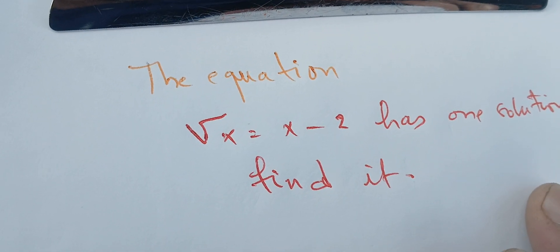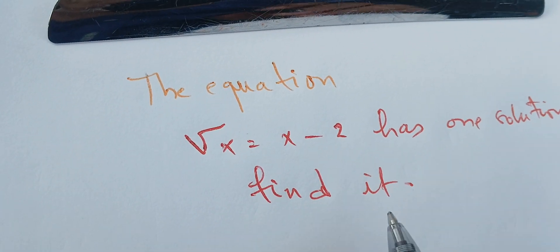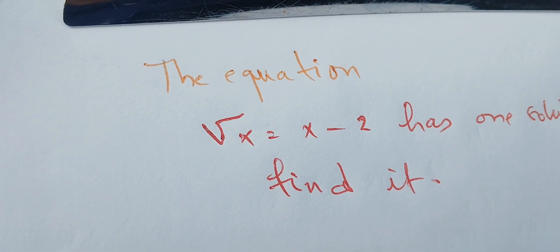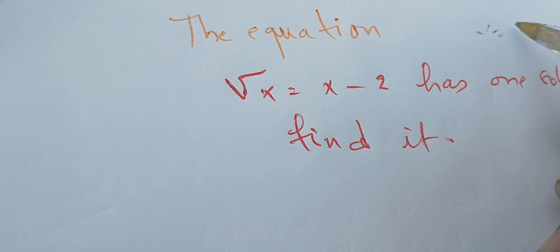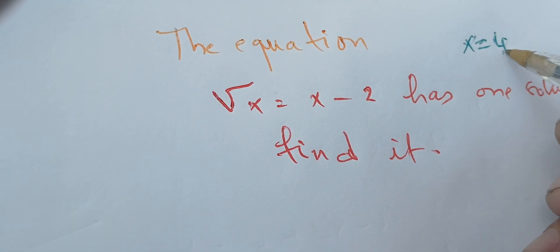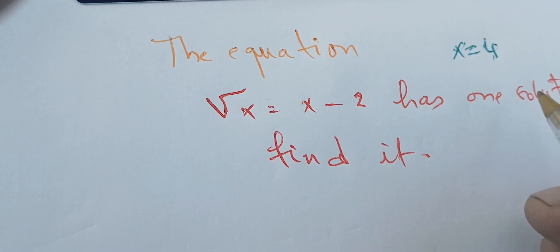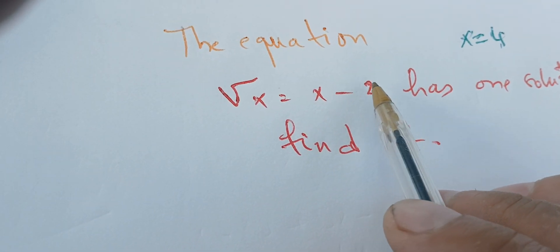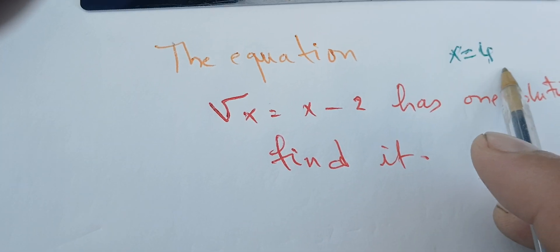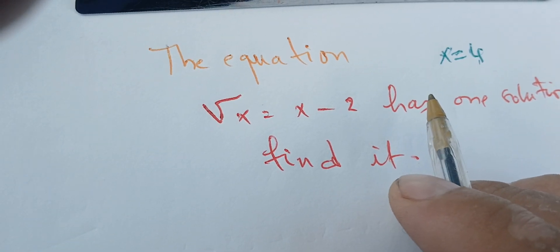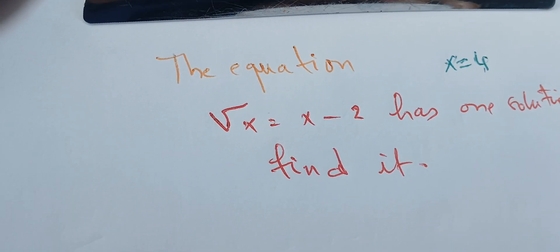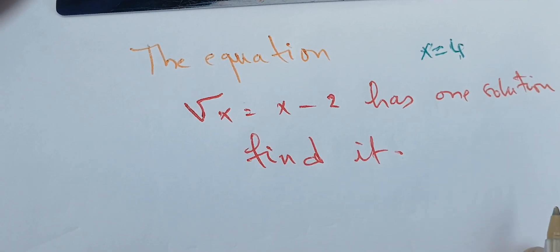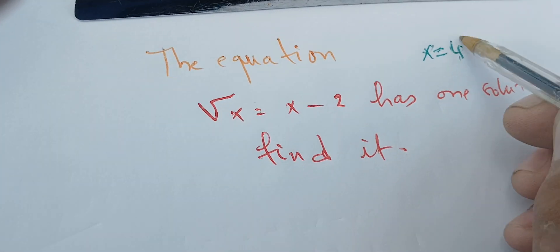If we start with trial and error, we can clearly see that if we plug in X equals 4, we get the square root of 4, which is 2, and that equals 4 minus 2, which is also 2. So X equals 4 works. But that's not how we solve this kind of question — we need to do some algebra.